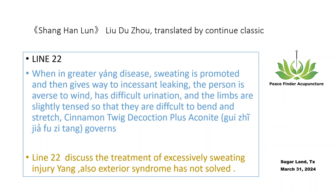Leaking sweat means that the yang chi has been damaged and cannot hold the yin. Limbs that are difficult to bend and stretch and difficult urination mean damage to the body fluid. Aversion to wind will be more severe than before due to damage to the defensive wei yang.